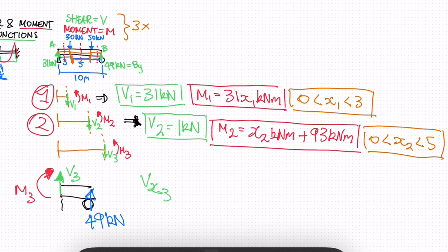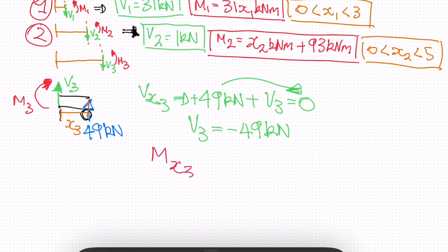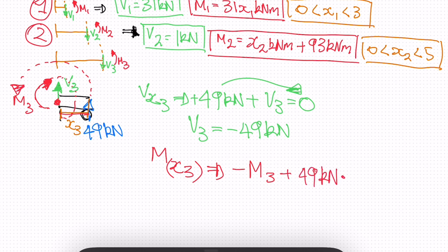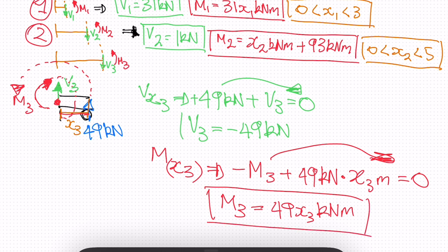For V(x3), analyzing from the right side with distance x3 from the reaction, we have positive 49 plus V3 = 0, so V3 = negative 49 kilonewtons. For M(x3), taking moments about the cut: negative M3 plus 49·x3 = 0, so M3 = 49·x3 kilonewton-meters. This gives us both the shear and moment functions for the third section.